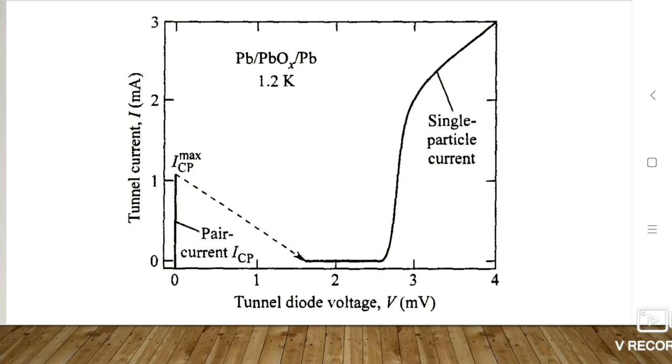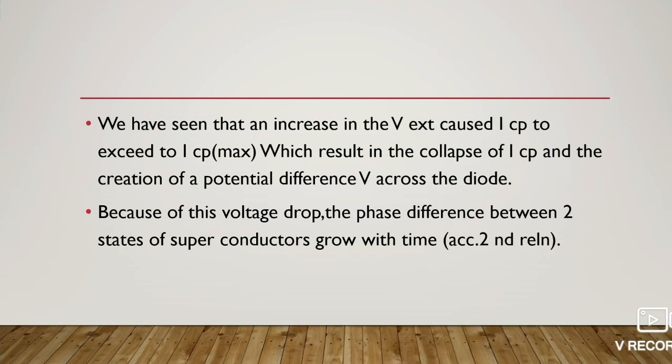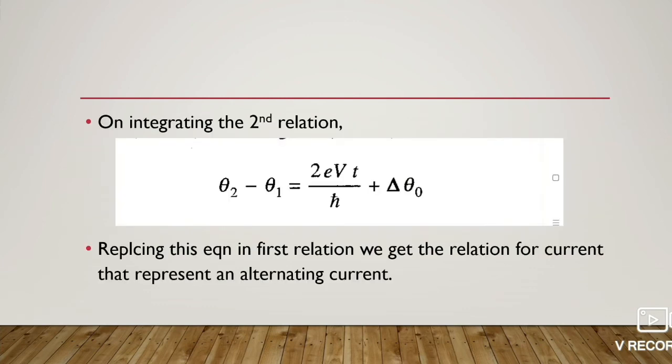We integrate the second relation. On integrating, we get θ₂ - θ₁ = (2eVt/ℏ) + Δθ₀, where Δθ₀ is the initial phase difference. Replacing this θ₂ - θ₁ in the first relation,